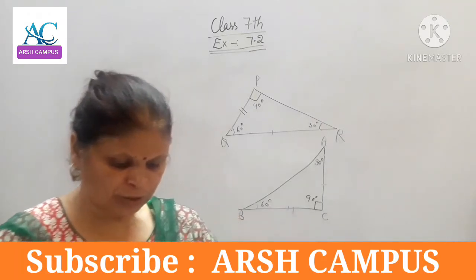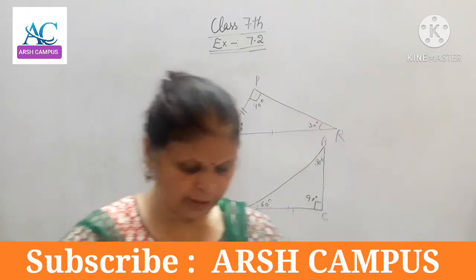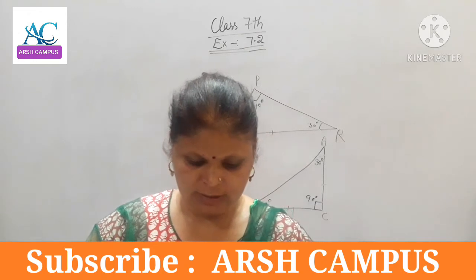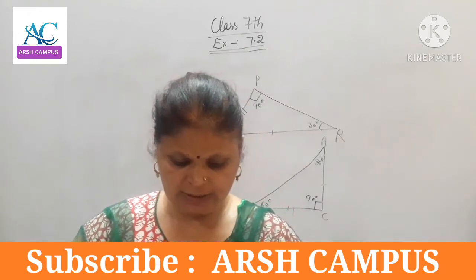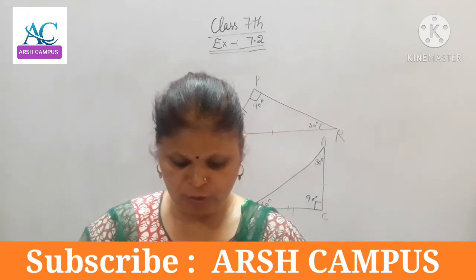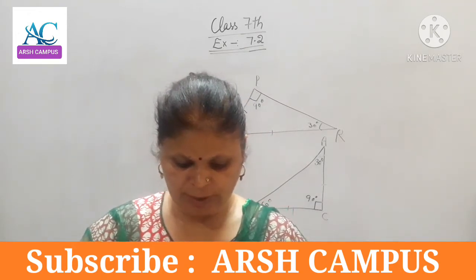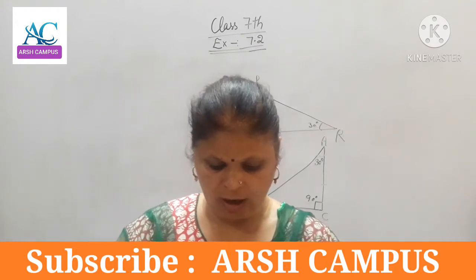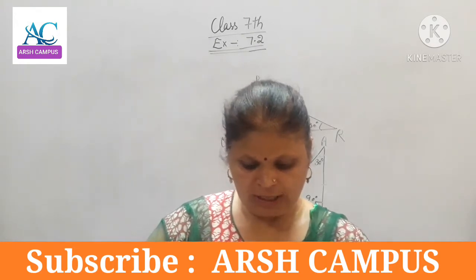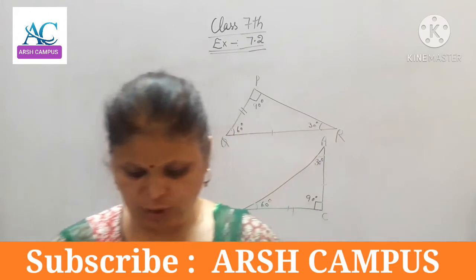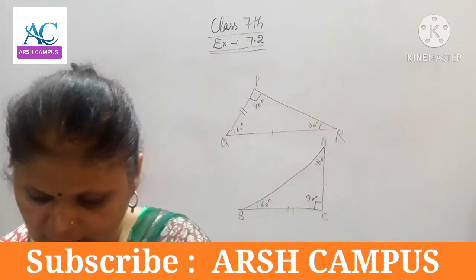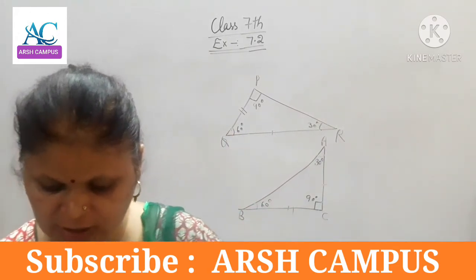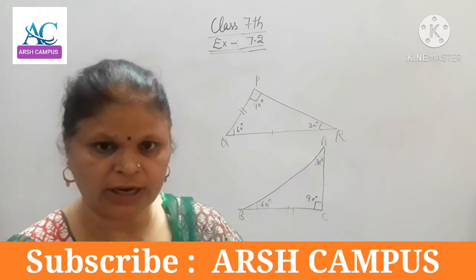Exercise 7.2, Question No. 8. Draw a rough sketch of two triangles such that they have five pairs of congruent parts, but still the triangles are not congruent. Five pairs are congruent but one part is not congruent.